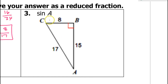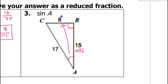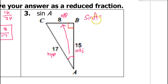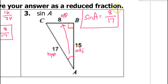Number 3: the sine of angle A. Here's angle A. From the perspective of angle A, 15 is adjacent because it's the leg right next to angle A. The 8 is the opposite leg because opposite means across from. And the 17 is the hypotenuse. The sine of A is opposite over hypotenuse, so that's 8 over 17. That can't be reduced, so this is the final answer.